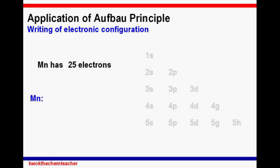My next example would be to show how we can write the electronic configuration using manganese as our example. In this example, I will not be using the box and electron diagram; I will just be writing out the electronic configuration. Manganese has 25 electrons. After filling the 1S subshell, manganese has 23 electrons left unfilled. After filling the 2S subshell, manganese has 21 electrons left unfilled. After filling the 2P subshell, manganese has 15 electrons left unfilled.